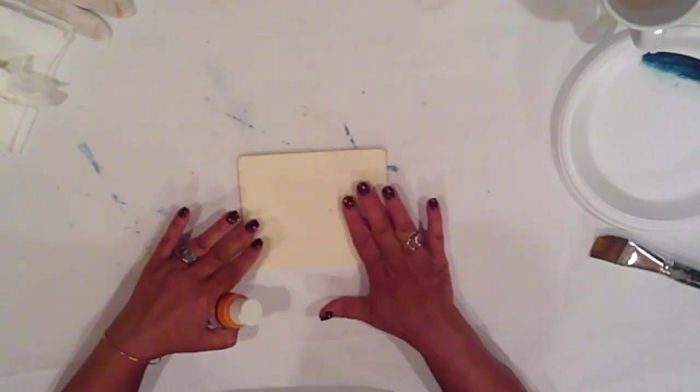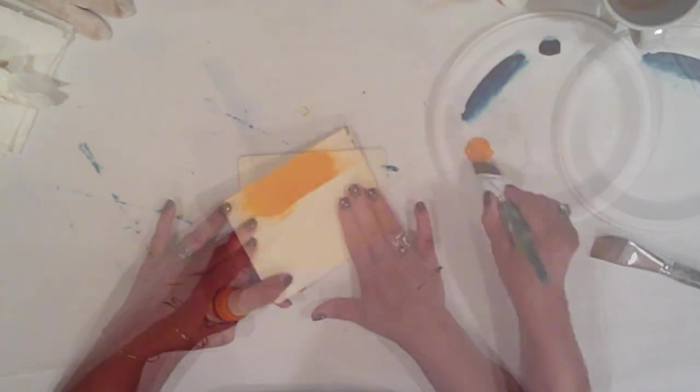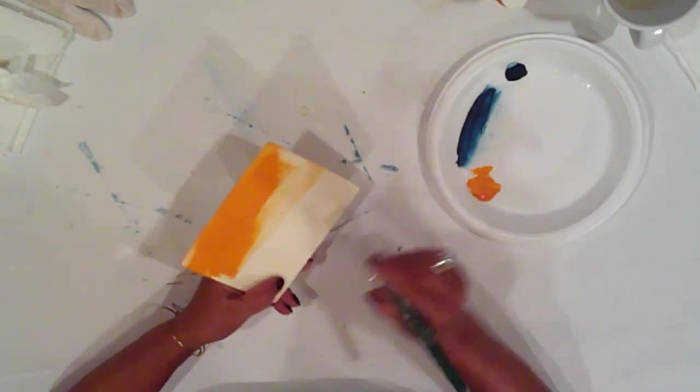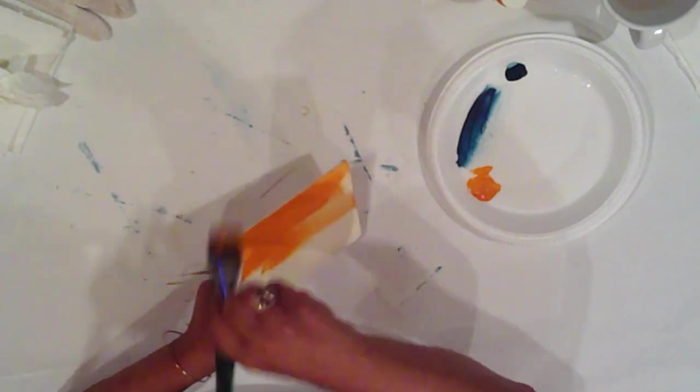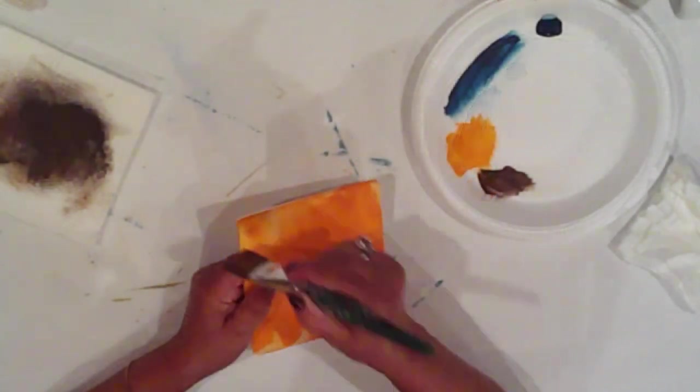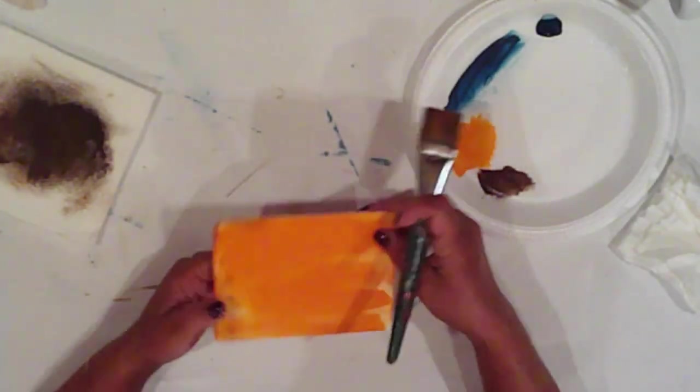Bittersweet Orange will base coat the sweet corn sign. I'm using loose, sparse strokes to paint this. I want some of the raw material to peek through. And again, I'll dry brush the edges with Burnt Umber.